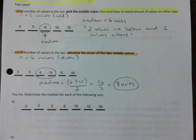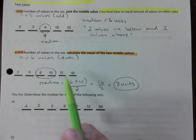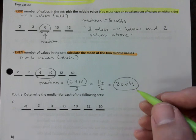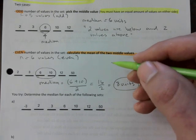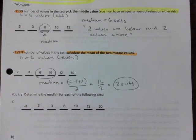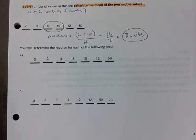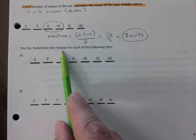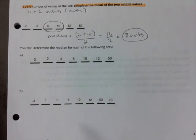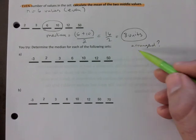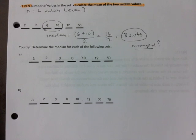Eight units — that is your median. Is the median actually a number in the data set? No, but it is still used to find the midpoint where half are below and half are above. Now I want you to determine the median for each of the following data sets. Check if it's arranged — you always have to ask: is my data arranged? Then proceed to figuring out which one the middle is.